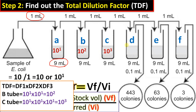Test tube D becomes 10^4, which is 10,000-fold diluted. Test tube E is 10^5 and test tube F is 10^6. We have now calculated the total dilution factor for all tubes.